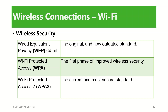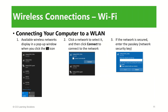Take note: you should always use the strongest level of wireless security supported by your wireless hardware. To connect your computer to a wireless LAN, go to the notification bar and find the Wi-Fi icon. Then choose the Wi-Fi name or the network name, click Connect, and enter the password.